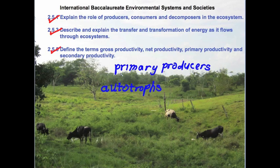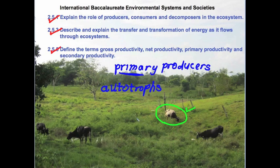The fact that we call autotrophs not just producers but primary producers implies that there could be another kind of producer, and that other kind of producer is visible right here in our picture. The cows that feed here are very much producers — we know that they produce milk, beef, butter and cheese, and of course they are feeding on the primary producers or the autotrophs.